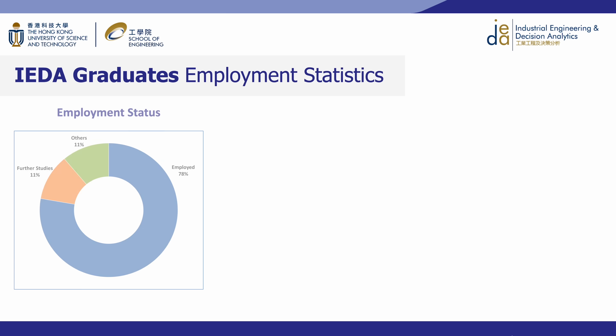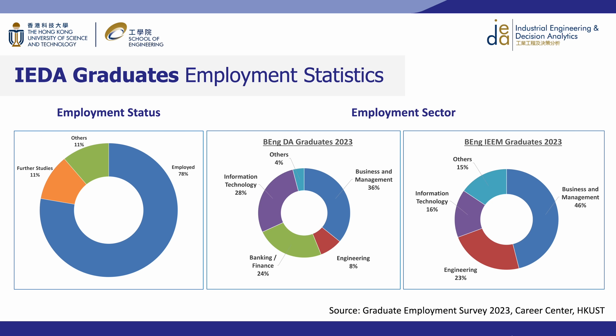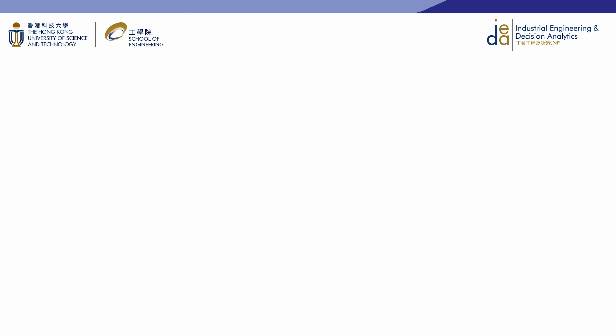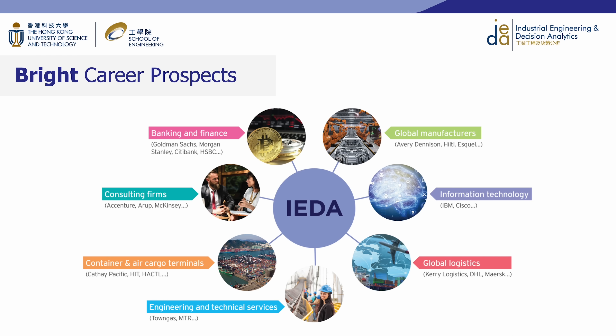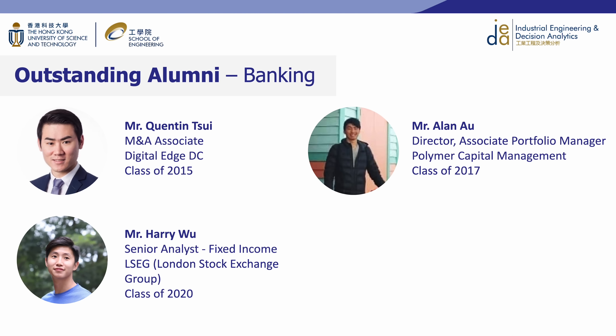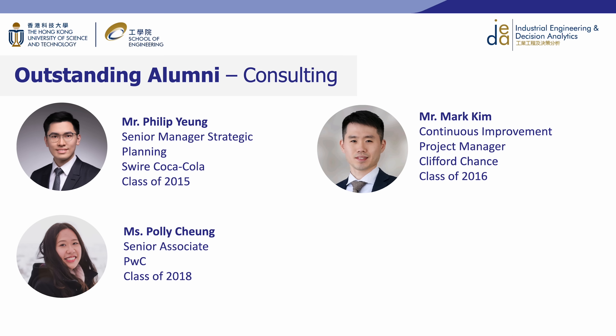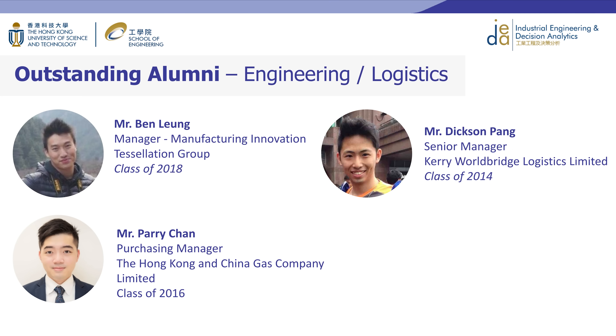Around 78 percent of our students get employed right after graduation, and 11 percent pursue further study in top universities in the US, UK, or other regions. Our graduates are employed in a wide range of industries taking up supervisory and managerial roles. DEA graduates will most likely work in business management and banking and finance industries, while IEEM graduates will work in business management and engineering industries. Our graduates have careers in banking and finance, consulting services, global manufacturers and logistics companies, data science, and engineering management.